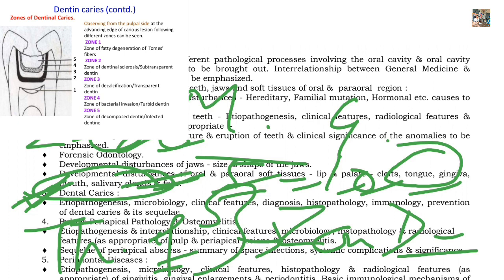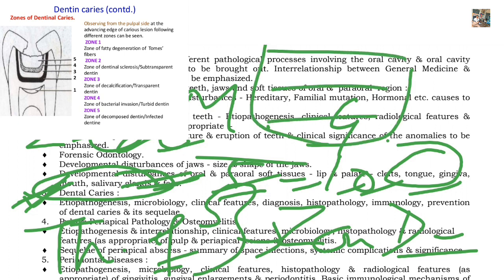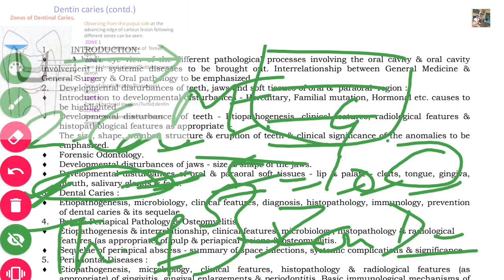In histology, when we observe enamel and dentine carious lesions under the microscope, we can see different zones, which you have to elaborate and write about. These can also be asked in viva.